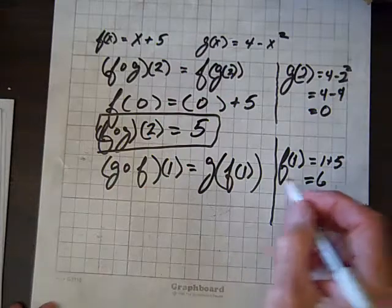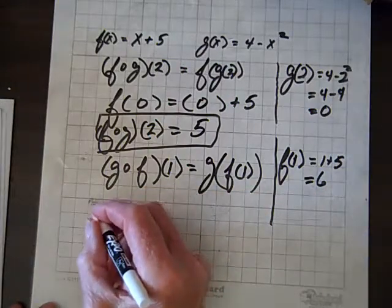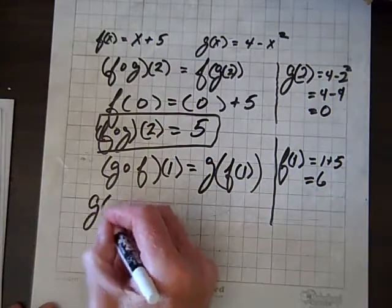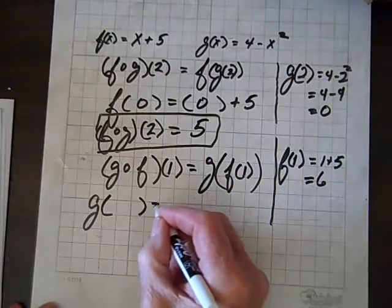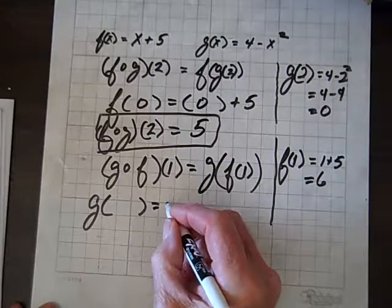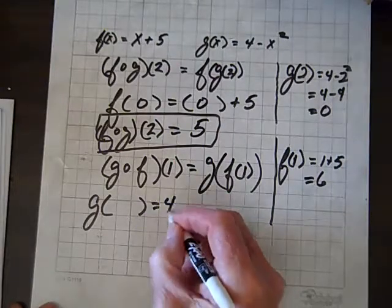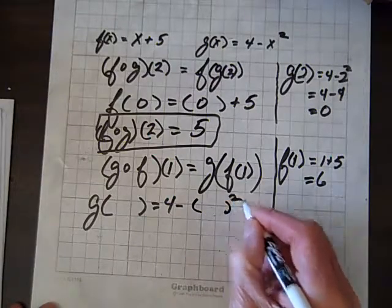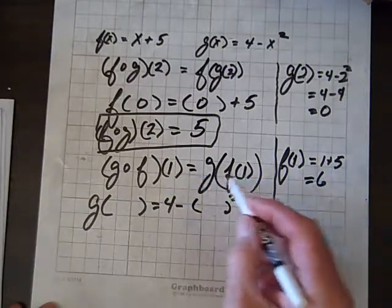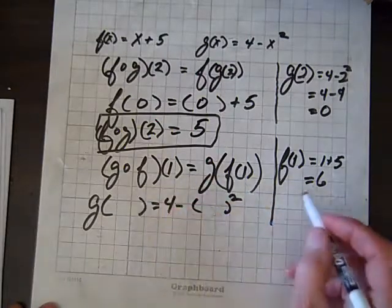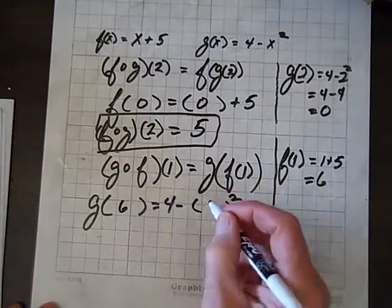So, now we know f of 1 equals 6, so we're talking about g of whatever equals 4 minus whatever squared. And in place of f of 1, we'll put 6. So, I'll put a 6 here.